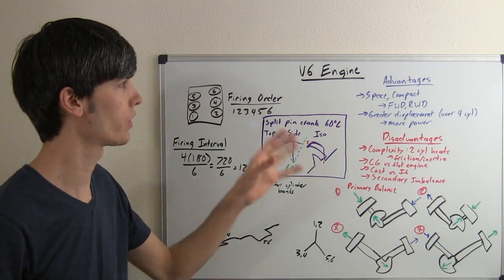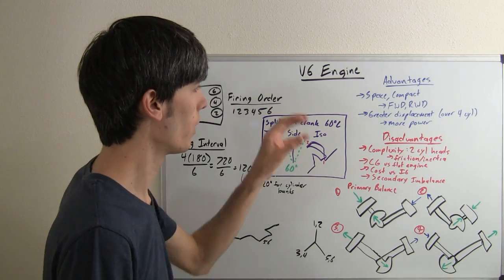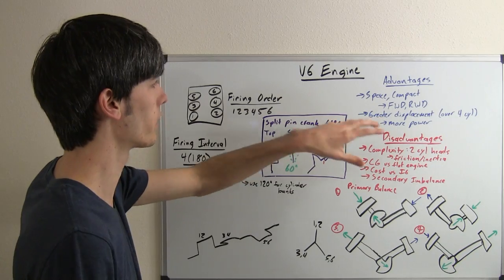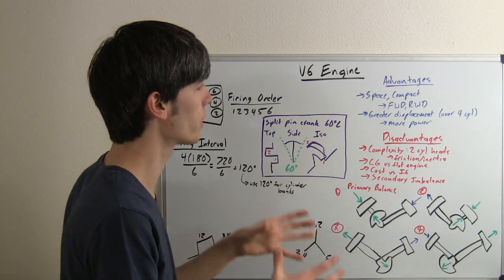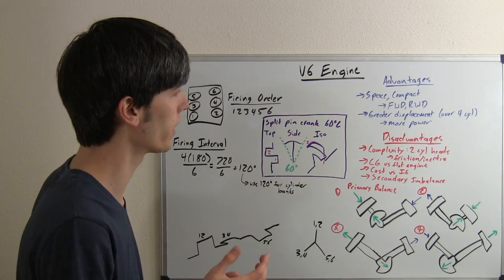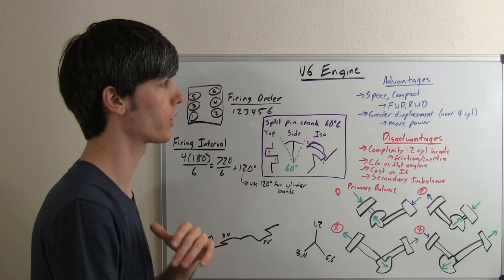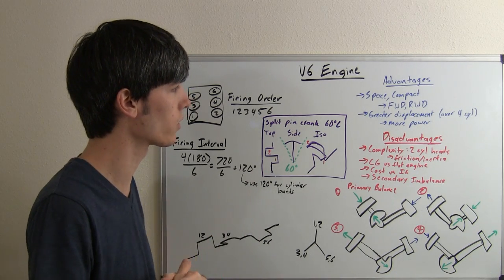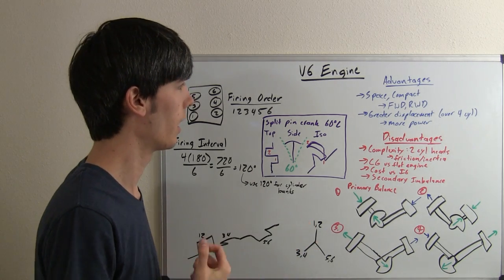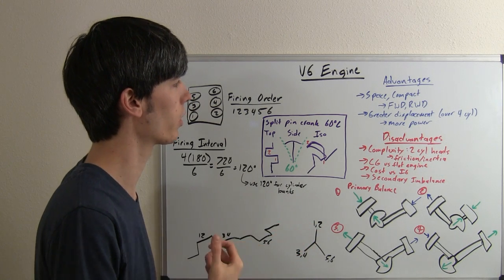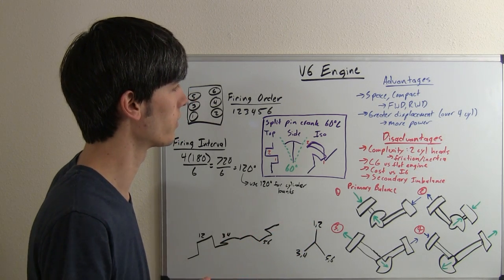So, advantages and disadvantages of a V6 engine. Well, the biggest advantage is that it's compact, so you can fit a pretty hefty engine in a fairly small area. That's great for both front wheel drive, rear wheel drive, or all wheel drive vehicles. As far as packaging, you can put it wherever you'd like, and it fits nice and snug.